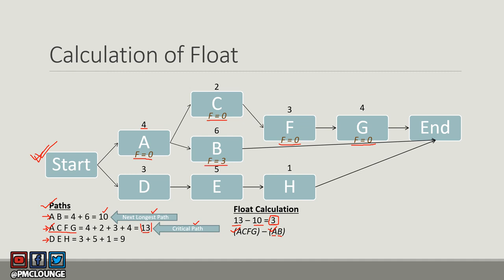Float for activity B is 3. Although activity A appears on this path, it is a critical path activity, so its float remains zero and cannot be changed even though the calculation gives 3. Activity B's float is 3, meaning activity B can be delayed by three days without impacting the project end date.